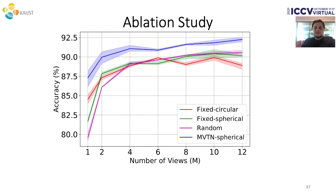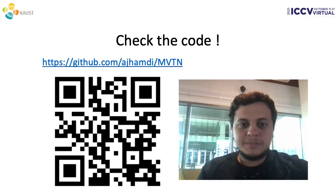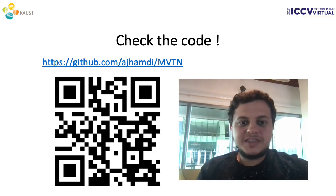We can plot the test accuracy versus the number of views used in training MVCNN. Using the learned MVTN views achieves a consistent 2% improvement over fixed or random baselines across multiple numbers of views. Please check the paper and code for more details. Thank you!